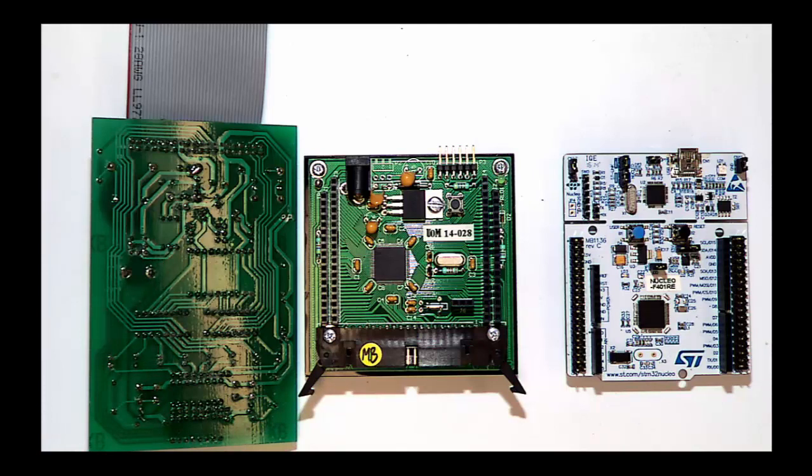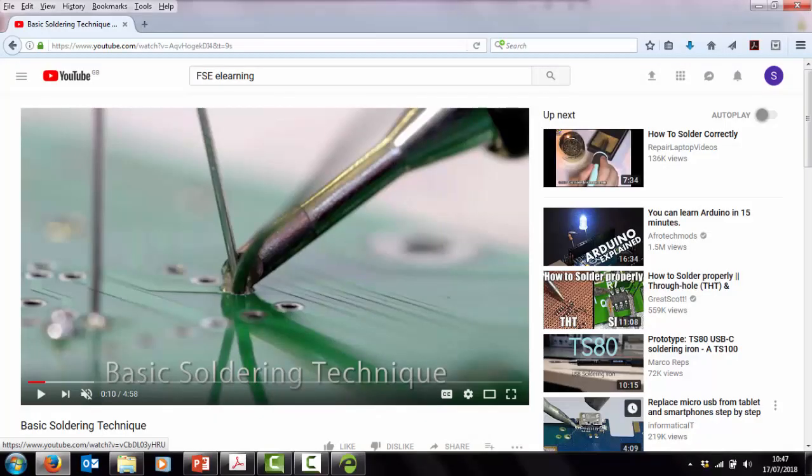Details of how PCBs are designed and fabricated will be covered in the PCB CAD lab and the corresponding PCB lecture. You will learn how to solder components onto a PCB during the electrical assembly labs. For further information about how to solder, please see the basic soldering technique video available on YouTube and Blackboard.